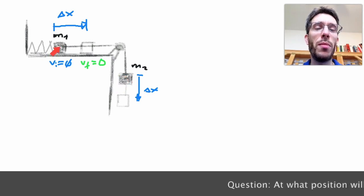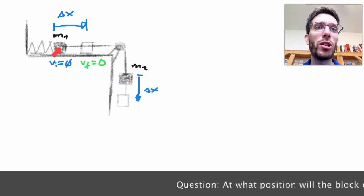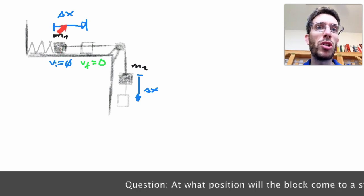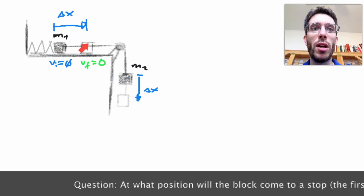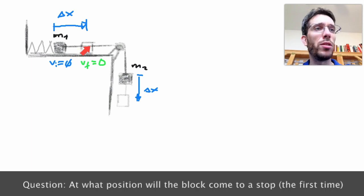The question is, if I'm letting go from the initial position, at what position delta x will the block eventually come to a stop?